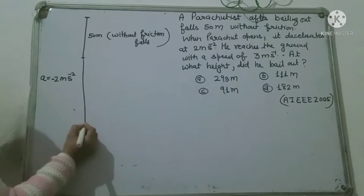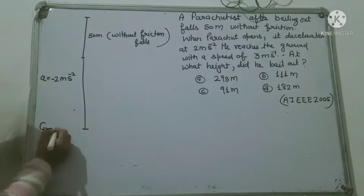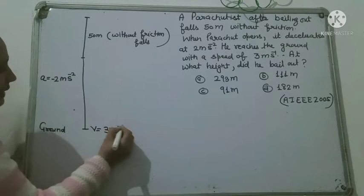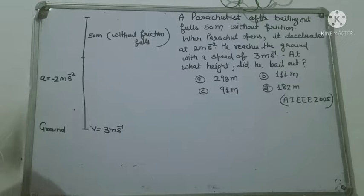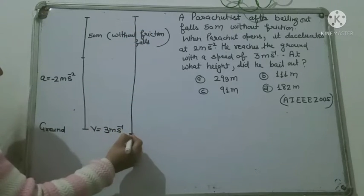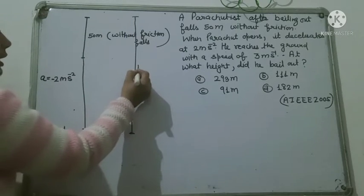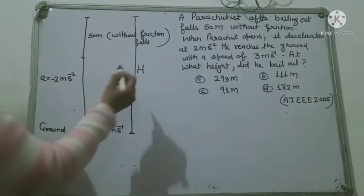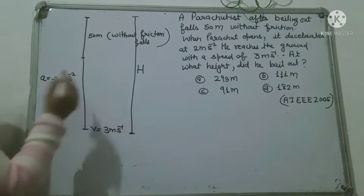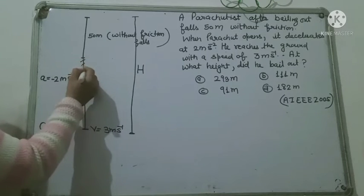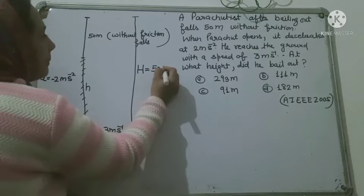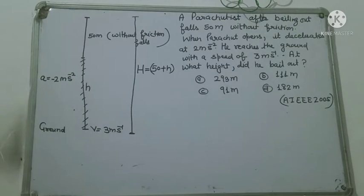He reaches the ground with a speed of 3 meter per second. तो यहाँ final speed कितनी से वो पहुँचा? 3 meter per second. At what height did he bail out? — तो वो पूछ रहा है कि किस height से उसने bail out किया था, यानि यहाँ से लेकर ground तक की height. इस height को हम two parts में divide करके देखें: 50 meter तो हमें पता है, और हमारा main purpose है इस small h को find out करना. क्योंकि अगर हमें यह small h पता चल गई, तो capital H बराबर होगी 50 plus small h.